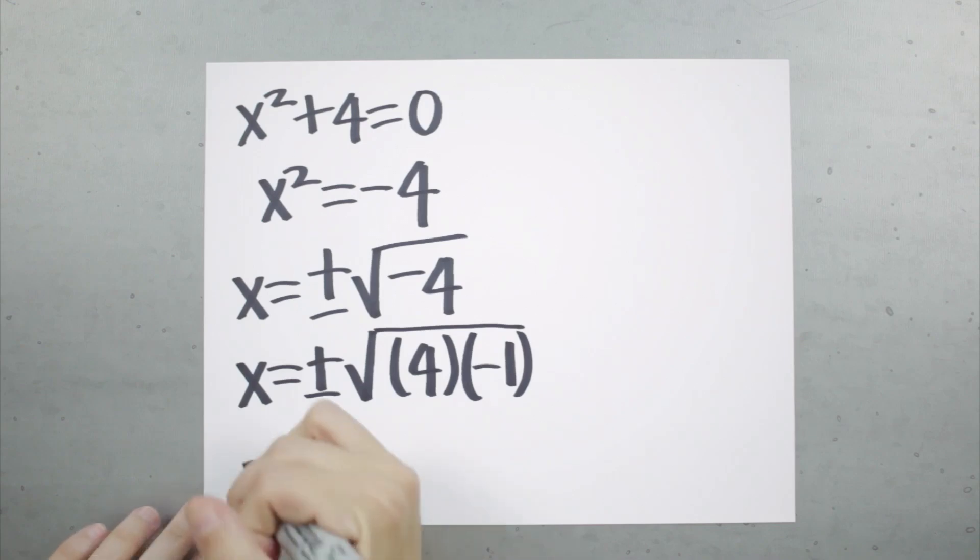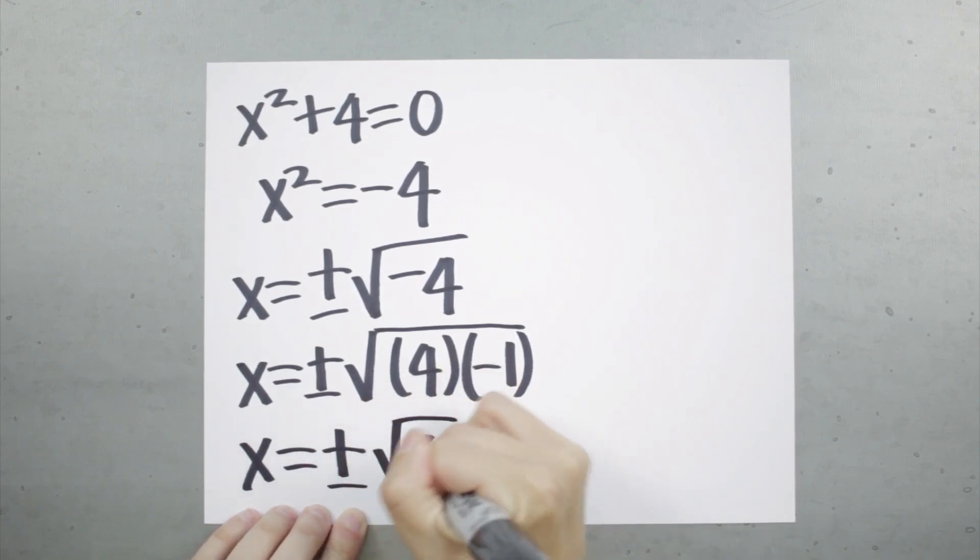Then we can say that negative 4 is the same as 4 times negative 1. And our rules for square roots tell us that we can split the square root of the product of two numbers into separate square roots, so we get x is positive or negative square root of 4 times square root of negative 1.